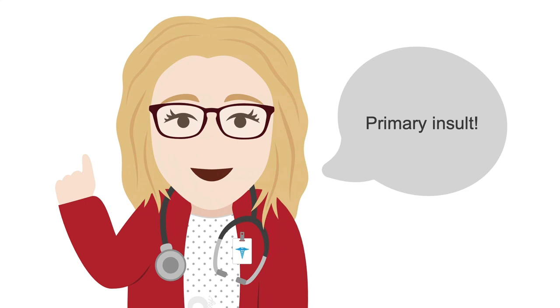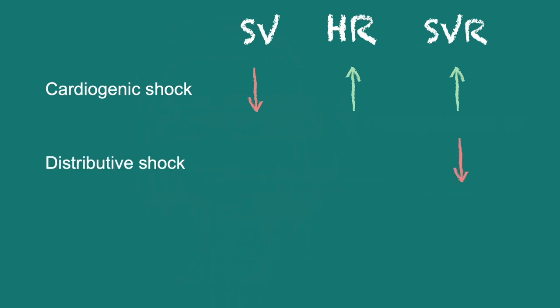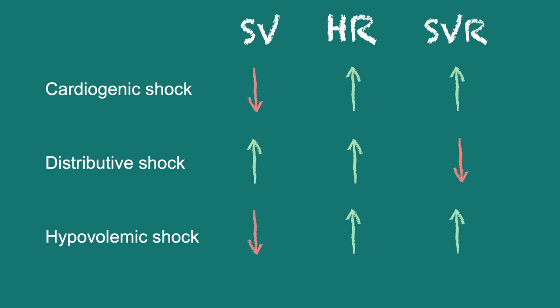We can build a chart to help remember the differences between the three common types of shock. In cardiogenic shock, the primary insult is reduced stroke volume, and the compensatory changes are increased heart rate and SVR. For distributive shock, the primary insult is reduced SVR, and then stroke volume and heart rate both increase to compensate. And finally, in hypovolemic shock, the primary insult is low stroke volume with a compensatory increase in heart rate and SVR.